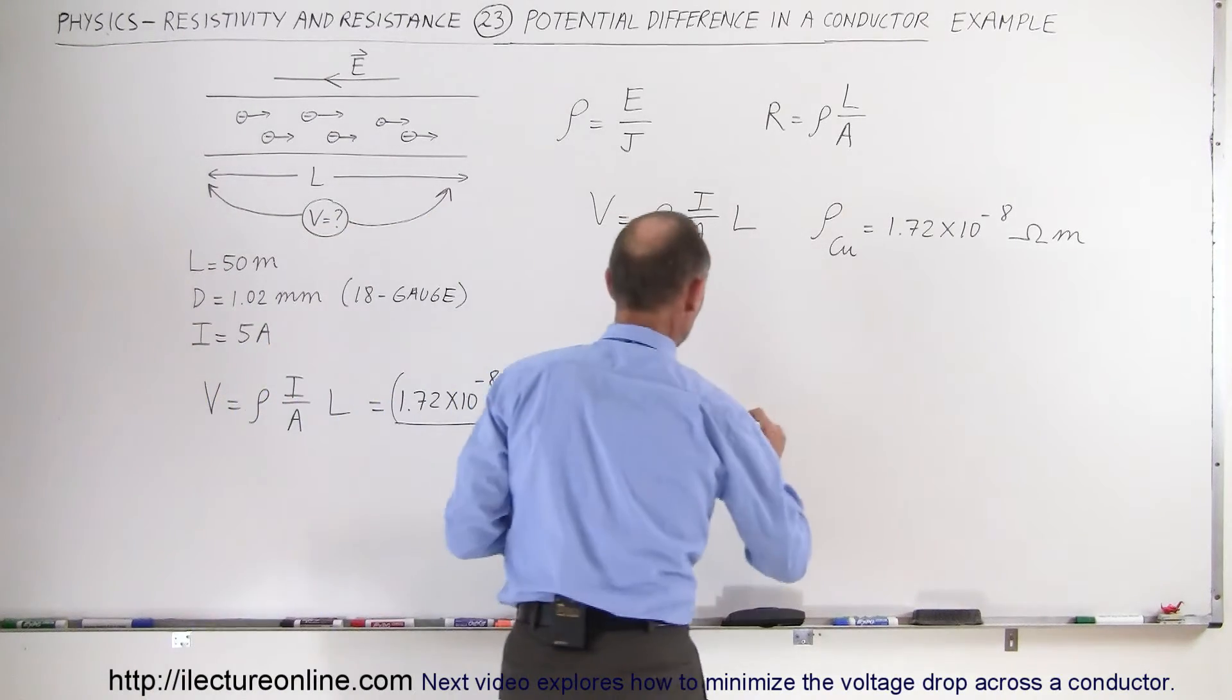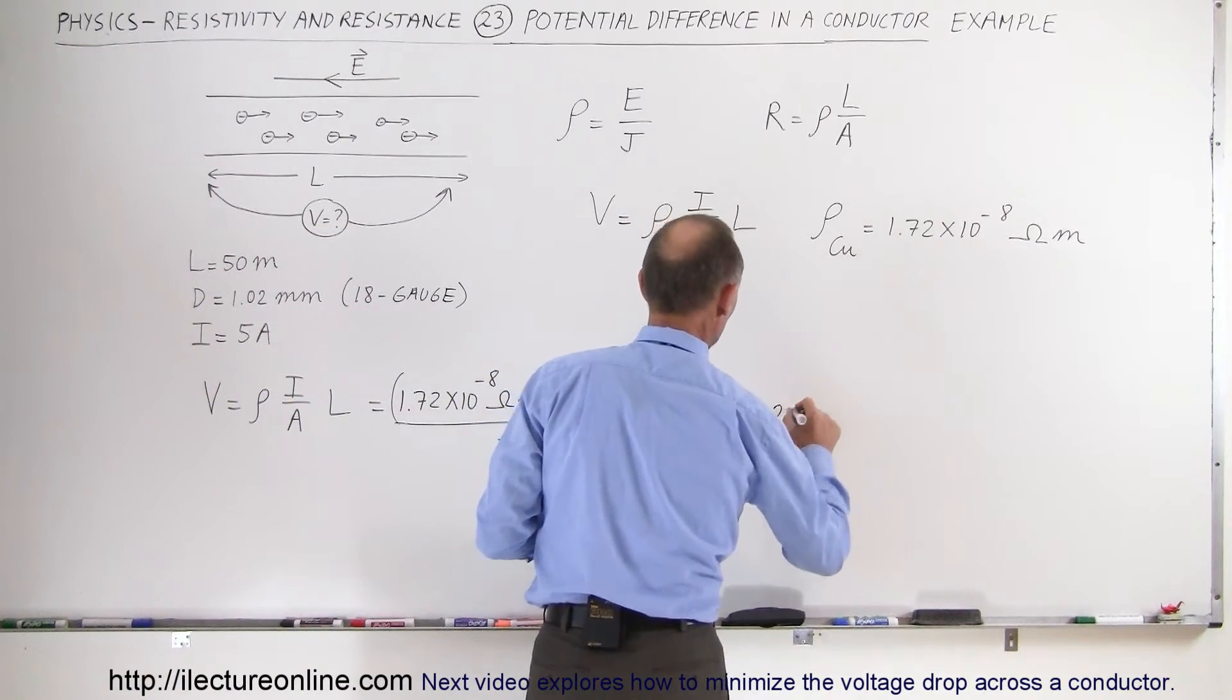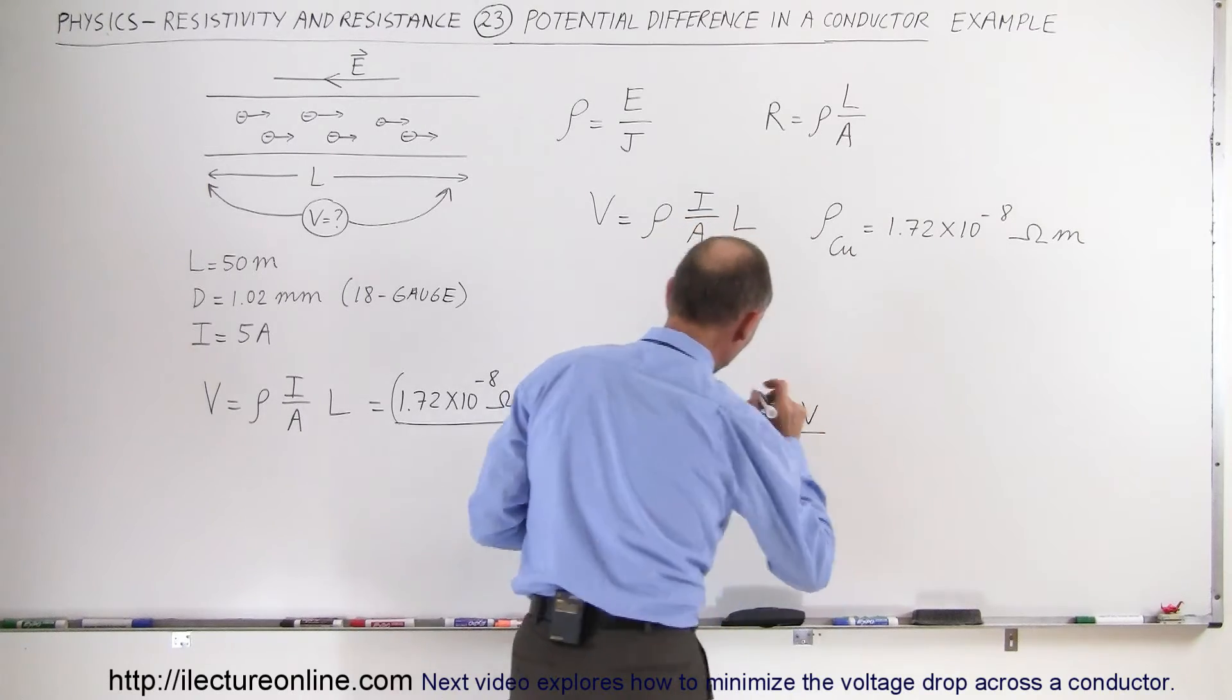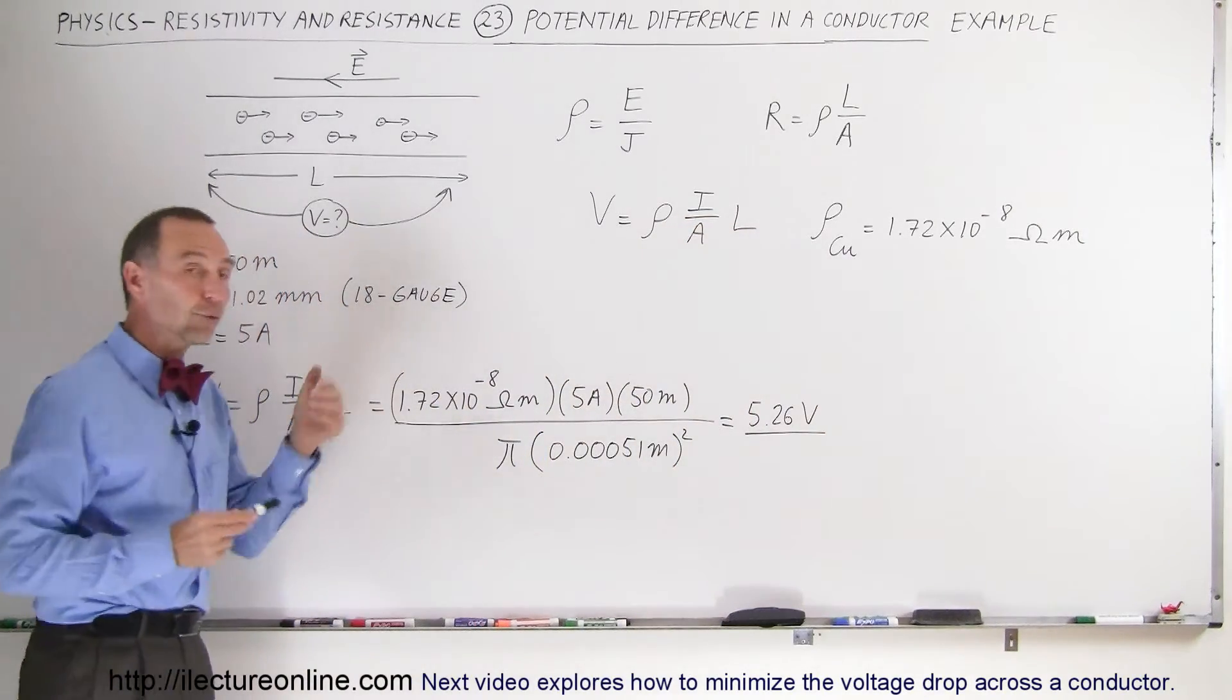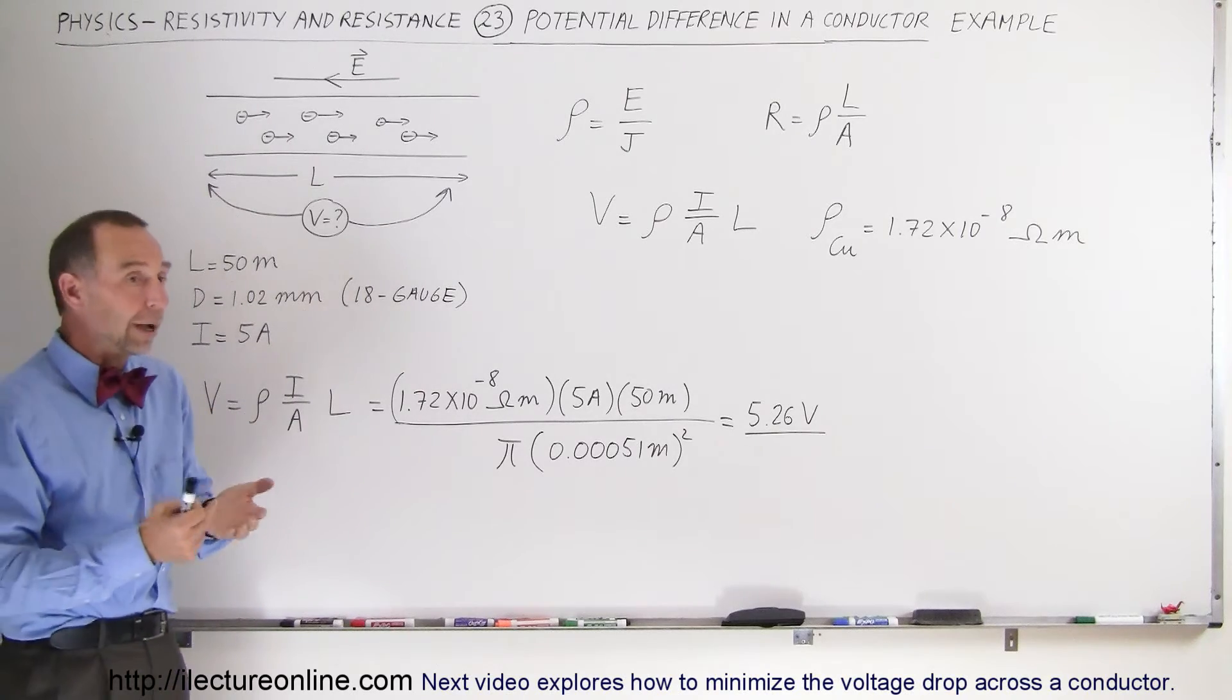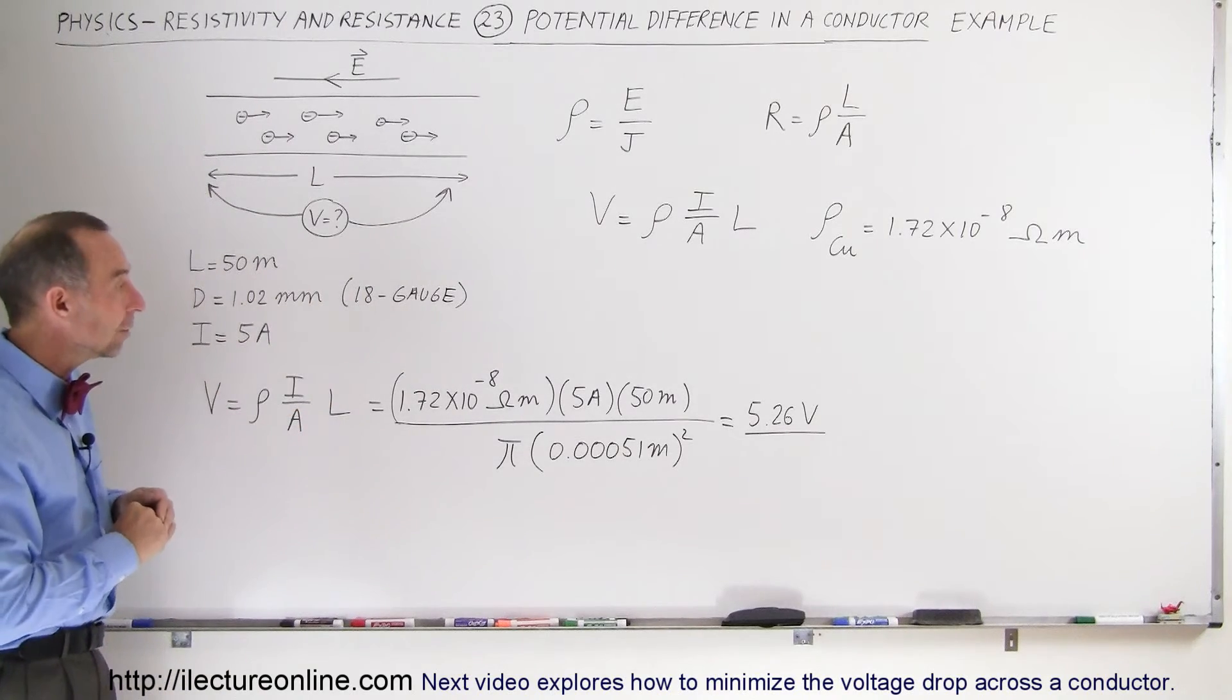So it would be equal to 5.26 volts, which is kind of interesting because this 18 gauge wire is typical household wire, wire that we have inside the house.